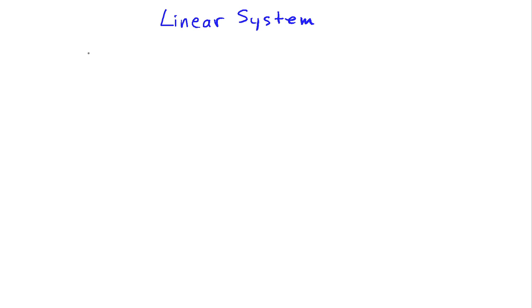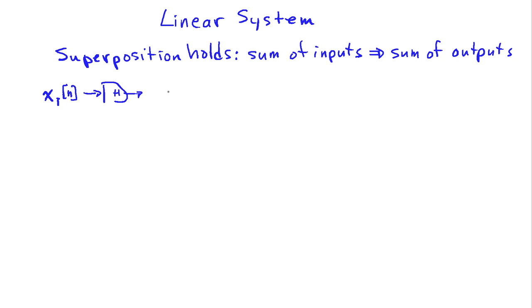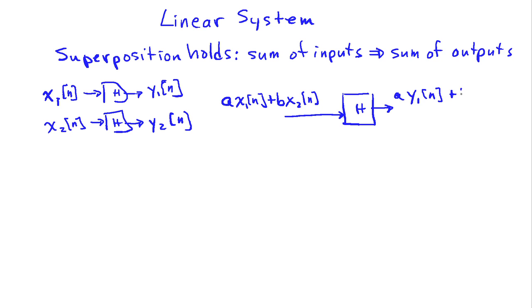So what does it mean for a system to be linear? Well, basically it means that superposition holds. In other words, a sum of inputs produces a corresponding sum of outputs. Suppose I have x1 of n goes into a system h and it generates y1 of n. And I have x2 of n goes into the same system, and it generates y2 of n. Then a linear system would have the property that if I put as an input a times x1 of n plus b times x2 of n, what I end up getting out of such a system is a times y1 of n plus b times y2 of n.